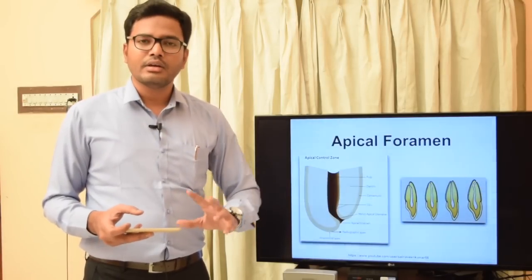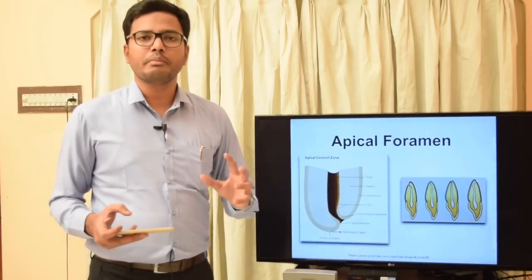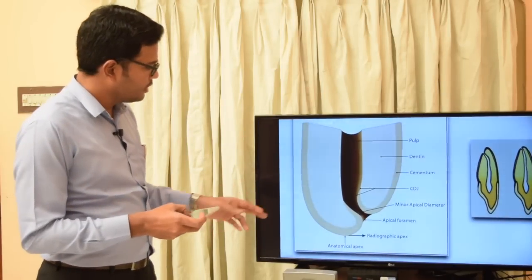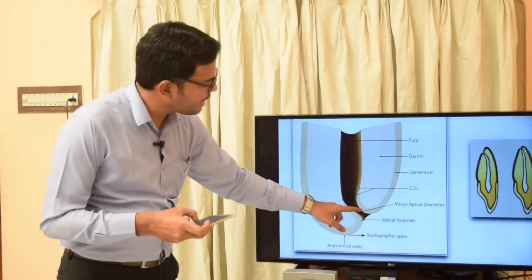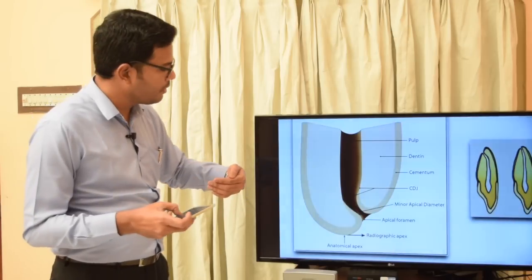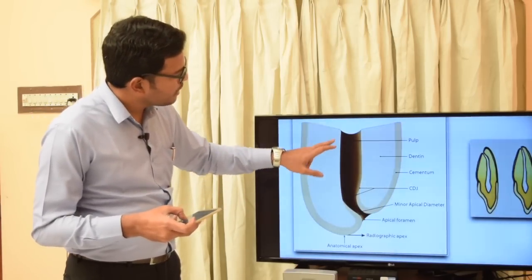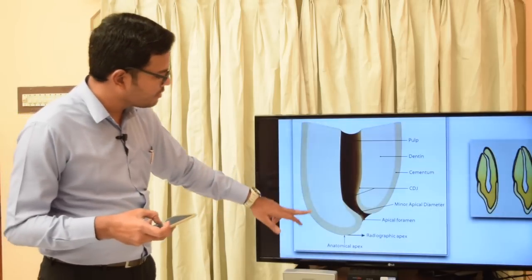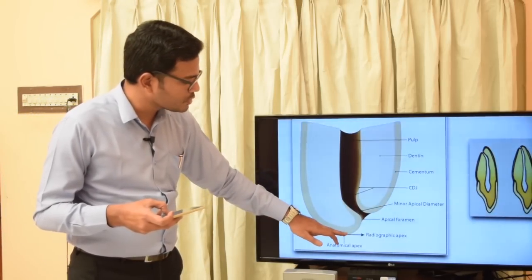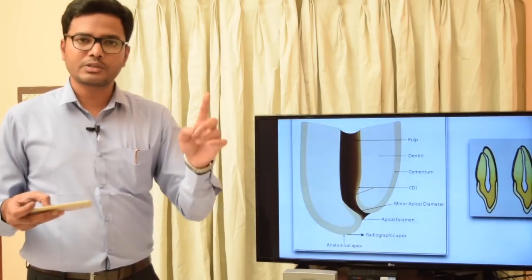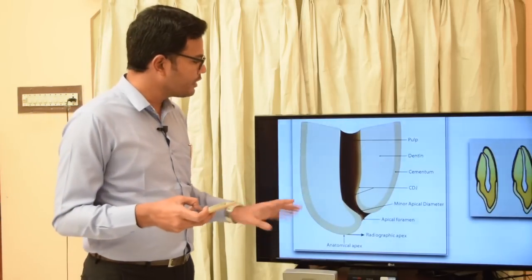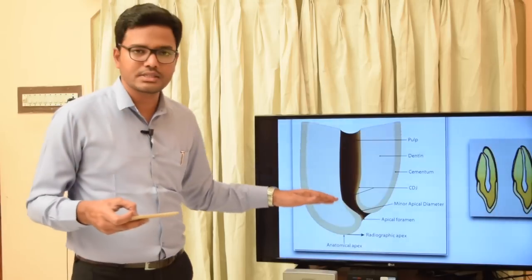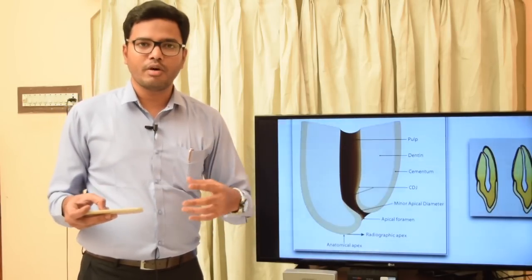Moving on to the apical foramen, the most important anatomical landmark. You can see a funnel-shaped opening with a major foramen and a minor constriction or minor foramen, which is 0.5 to 1 mm within the anatomic apex, along with pulp, dentin, cementum, and the cemento-dentinal junction (CDJ) — the most important histological landmark. The anatomic apex also corresponds to the radiographic apex. Understanding the apical foramen is essential because root canal biomechanical preparation and obturation terminate at specific landmarks here.